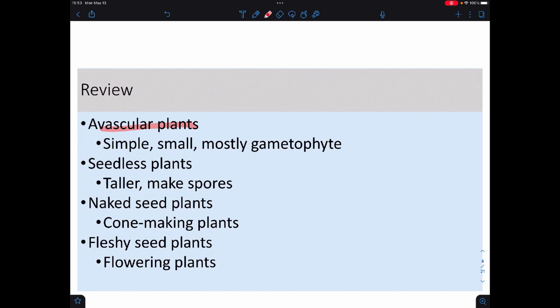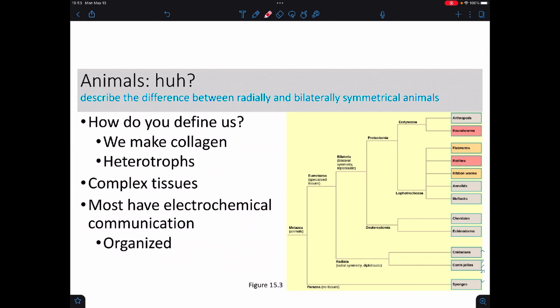So last time we talked about plant diversity. We had the avascular plants, which are really small. We then dealt with the seedless plants. These have xylem and phloem, which are the vascular tissues, and they got to be bigger. Then we got the plants that started to make seeds. So we have the naked seeds, which are the gymnosperms. These tend to make cones. And then we have the fleshy seeds or the angiosperms. These are the ones that make flowers.